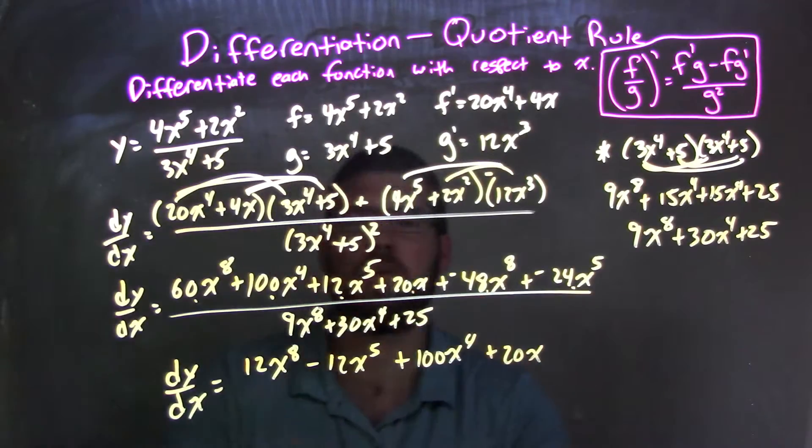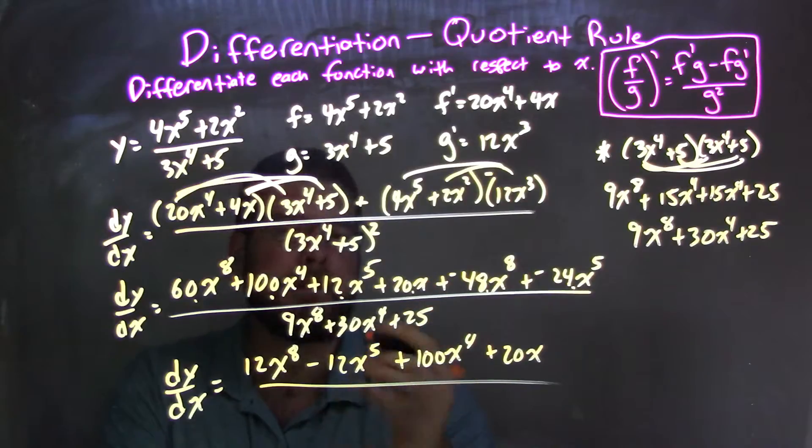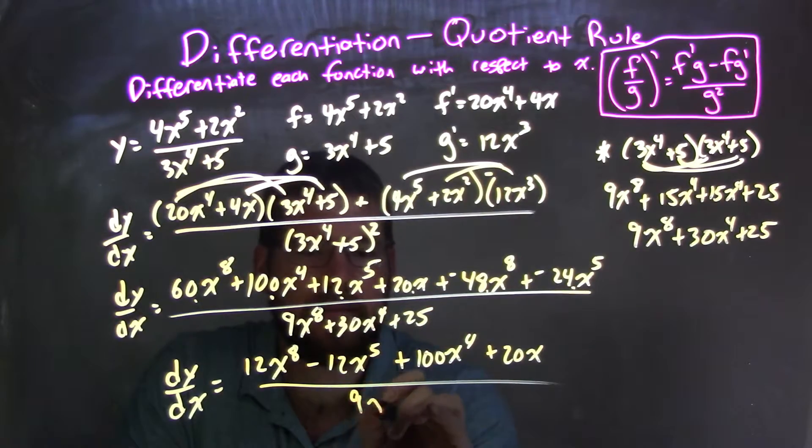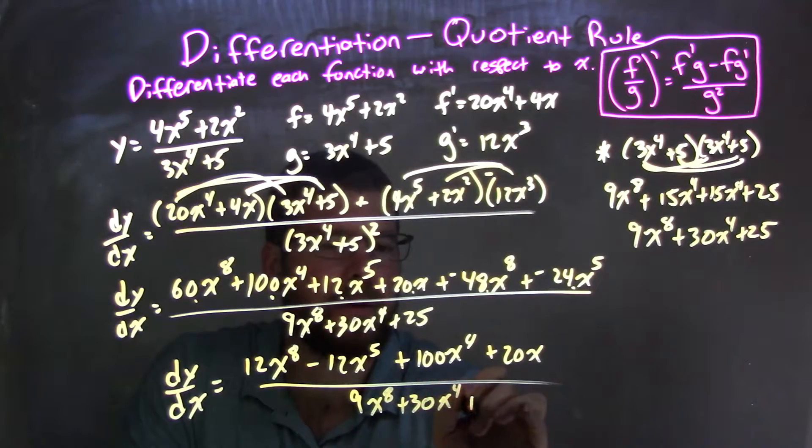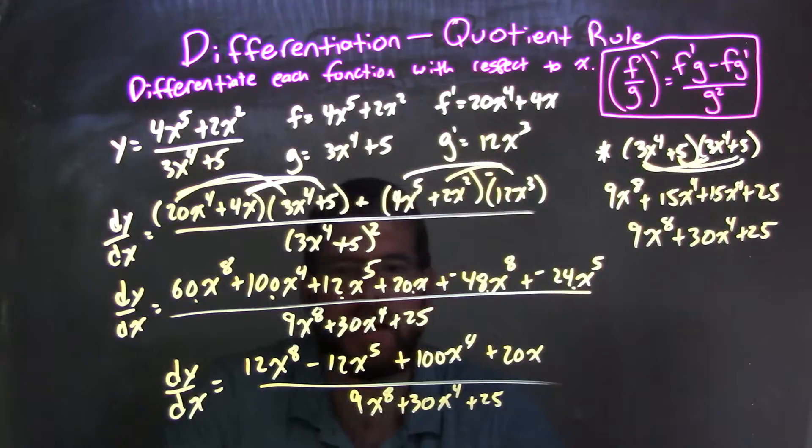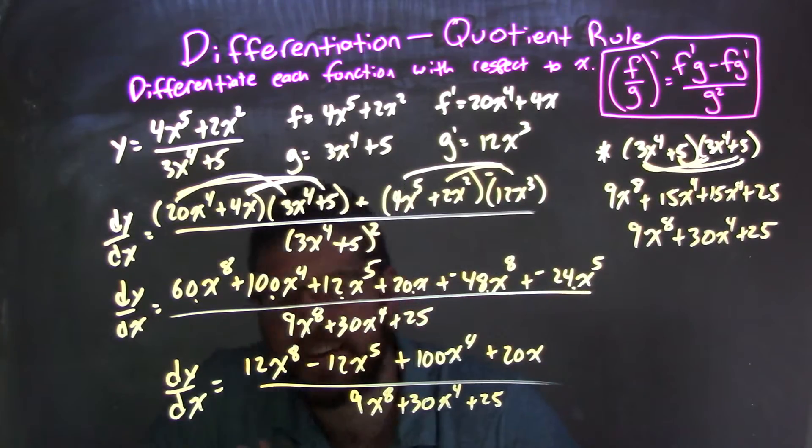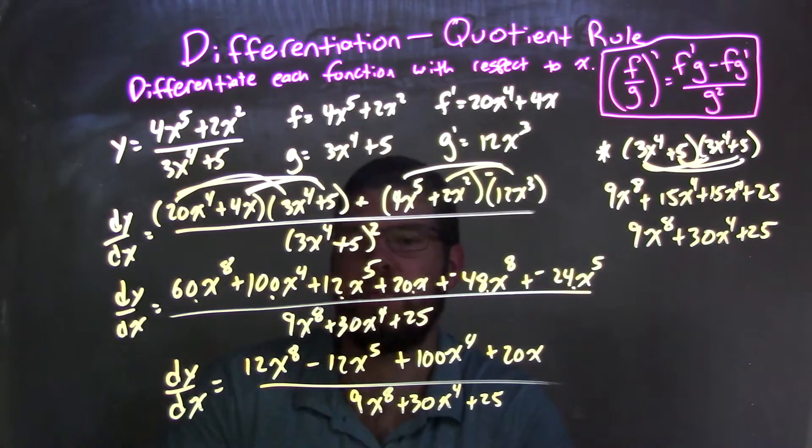And I believe I have all of them brought down. Fantastic. Now my denominator, simplify it out here, or rewrite it, 9x to the eighth plus 30x to the fourth plus 25. And there's nothing I can really simplify here. No like terms I can pull out of the numerator and denominator, not that I'm aware of. And it's not the end of the world, to be honest.